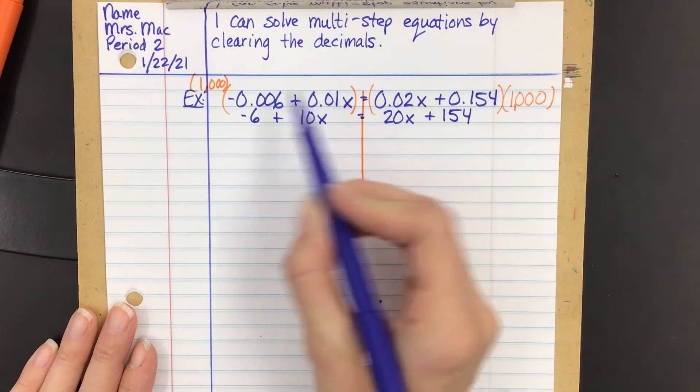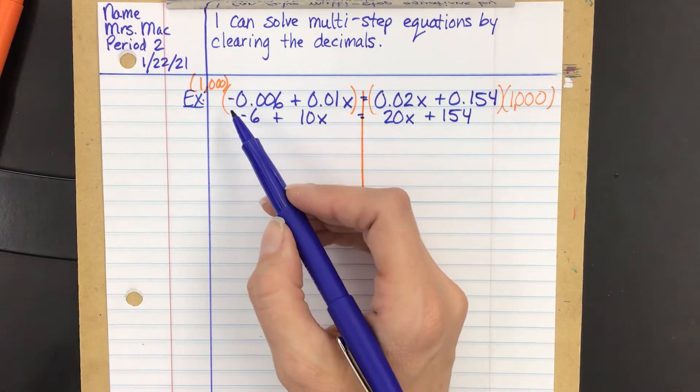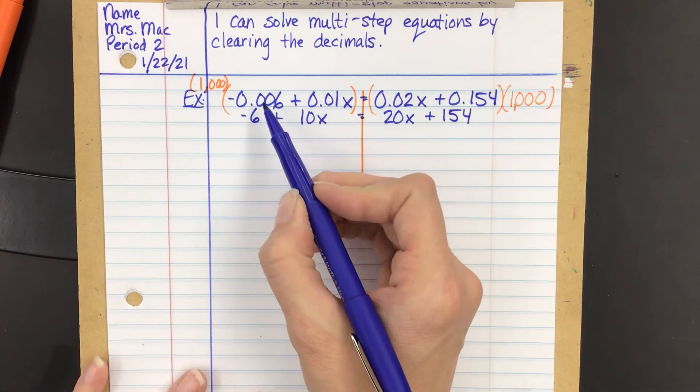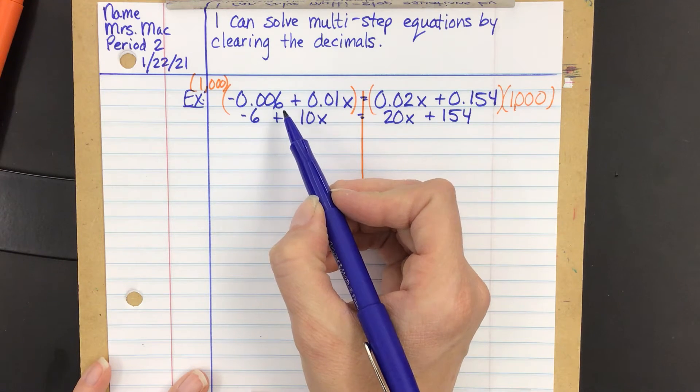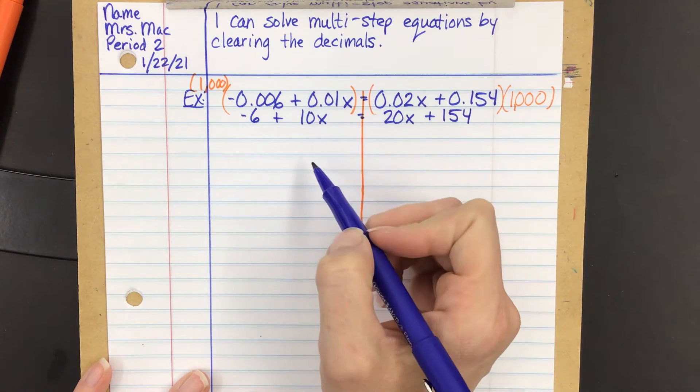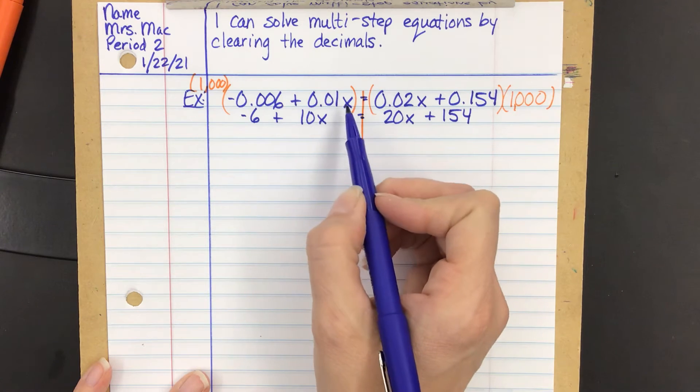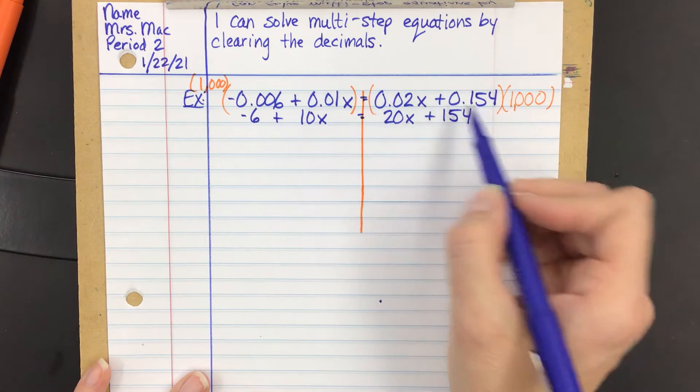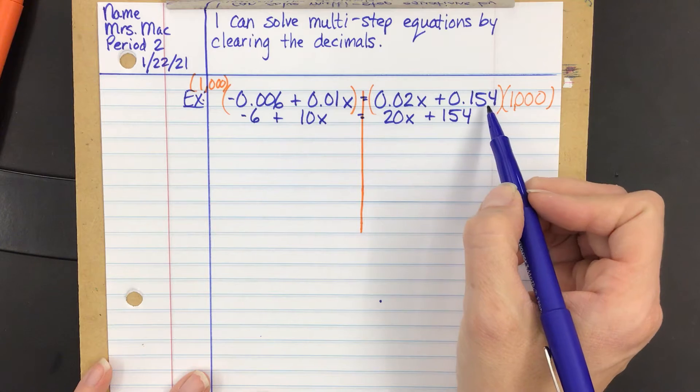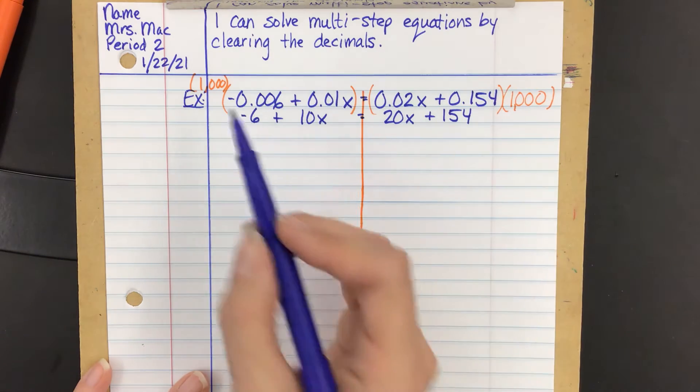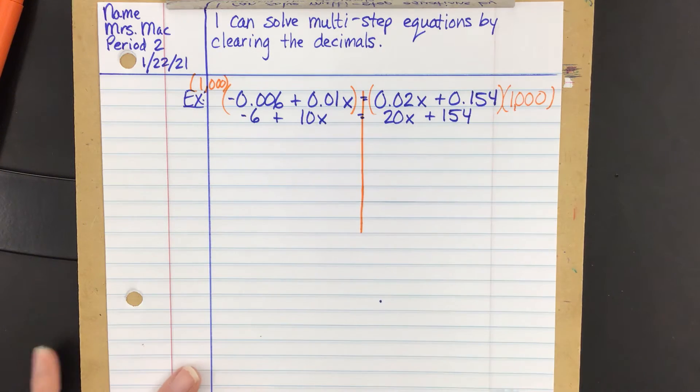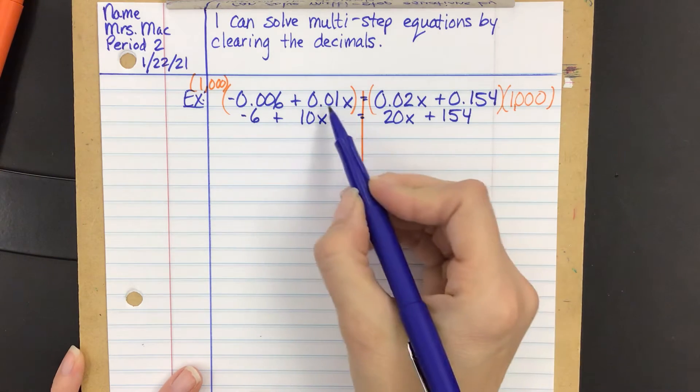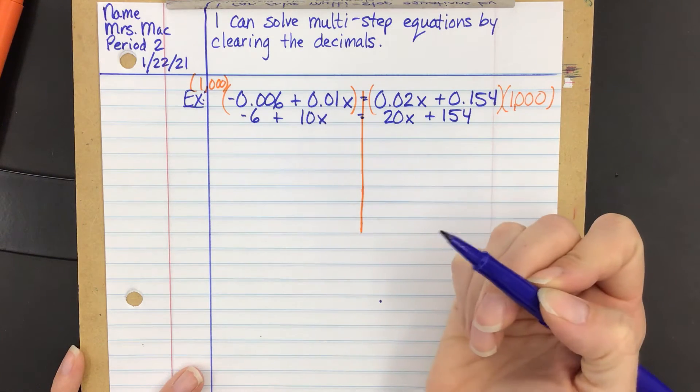Yeah. And one of the most common mistakes is people will decide what they want to multiply by. And then, instead of moving it over the specific number of decimal places like they're supposed to, they'll just make everything whole numbers. So they'll make this negative 6, 1x, 2x, and 154. But when you multiply by 1,000, you need to be very careful to move it over the appropriate number of decimal places. Even if that means that you have to add a zero like we did for 10. Okay.